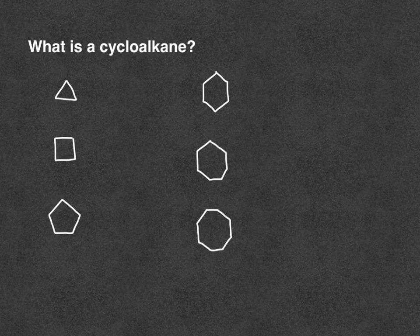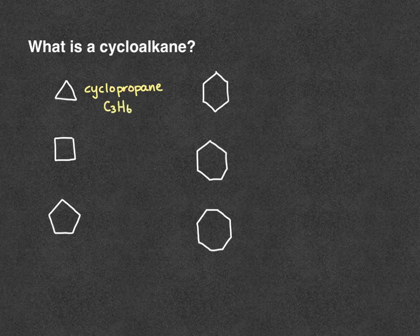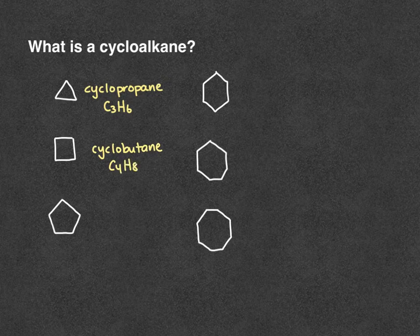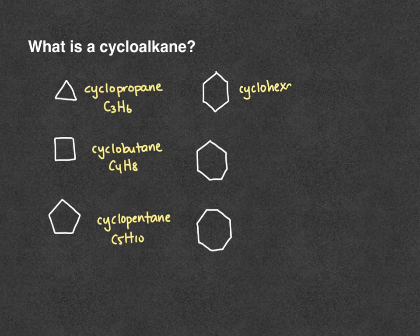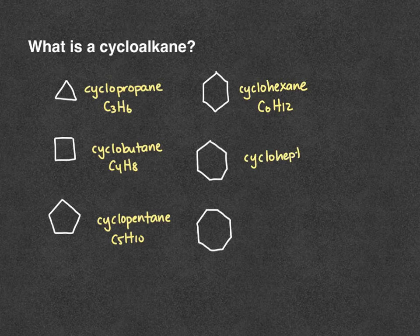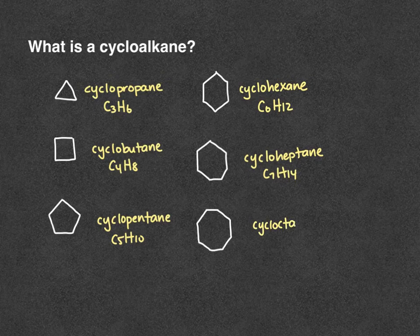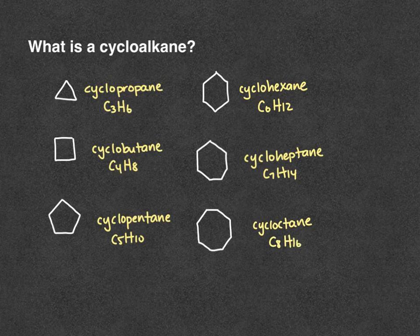Here we have our six most common cycloalkanes. We have cyclopropane C3H6, cyclobutane C4H8, cyclopentane C5H10, cyclohexane C6H12, cycloheptane C7H14, and cyclooctane. I usually drop the second O for cyclooctane so it's a little easier to spell. And C8H16. I'm not going to draw 9 and 10 because it's just too hard.